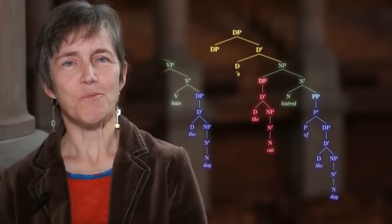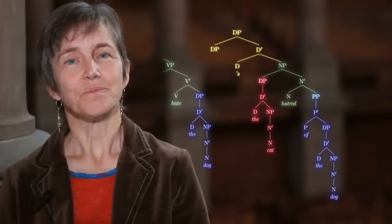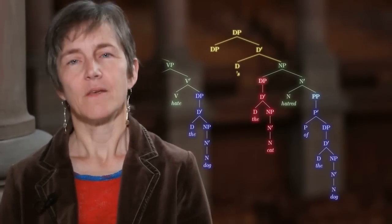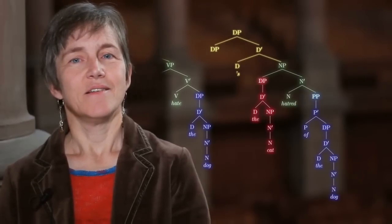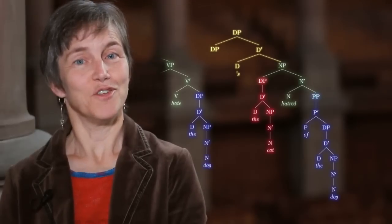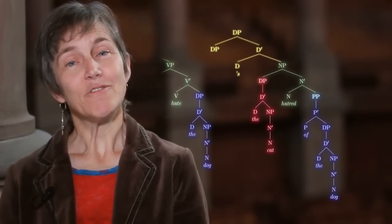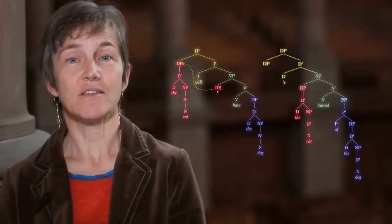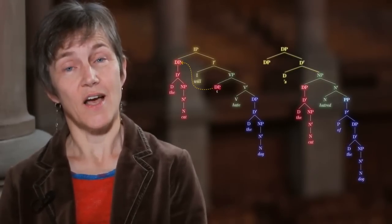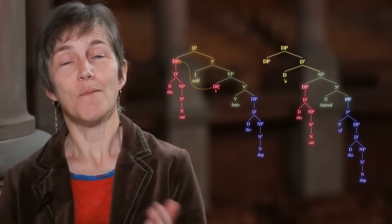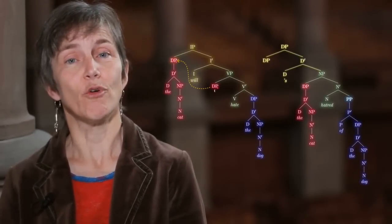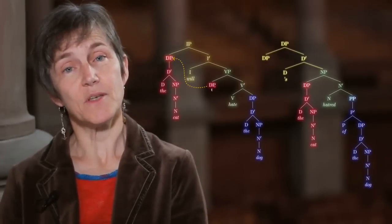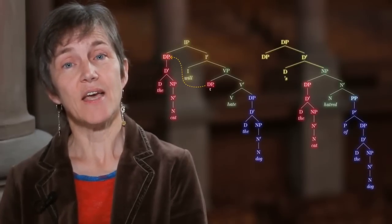But now it looks like we have a problem because we've got the wrong order — we've got 's and then the subject and then the rest of the N-bar, something like 's cat hatred of the dog. That's clearly the wrong order. But if you think about it, that's exactly the same problem we had in the case of the sentence: the subject originates in the VP, but that puts it on the wrong side of the inflectional element — it would come after a modal like will, where we've seen that it comes before.